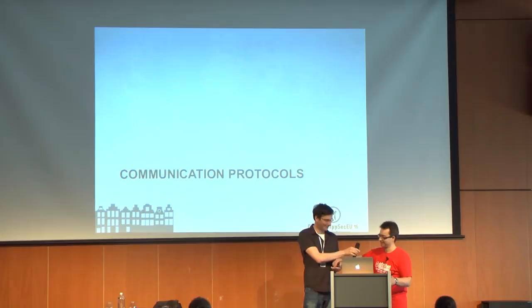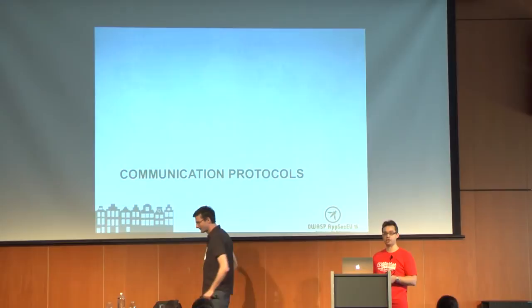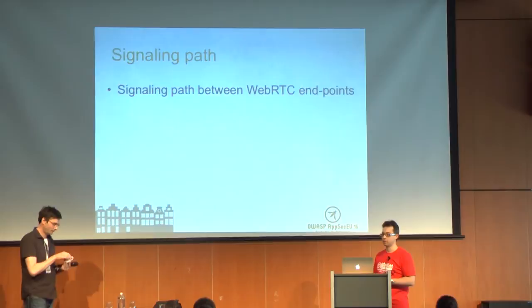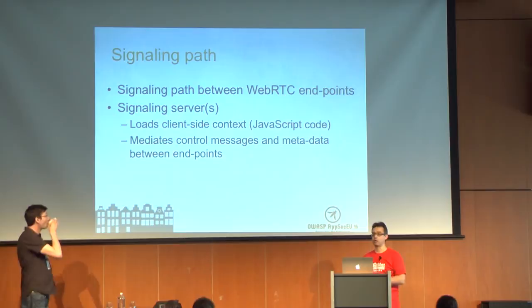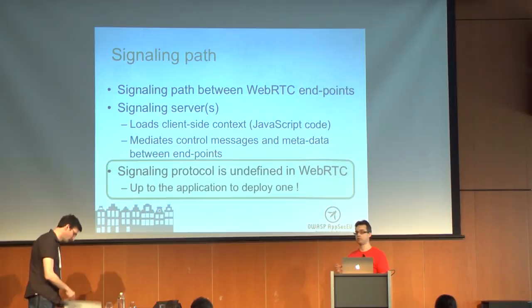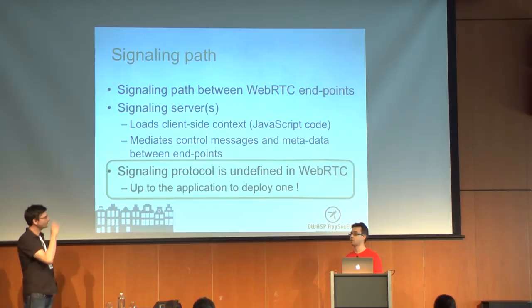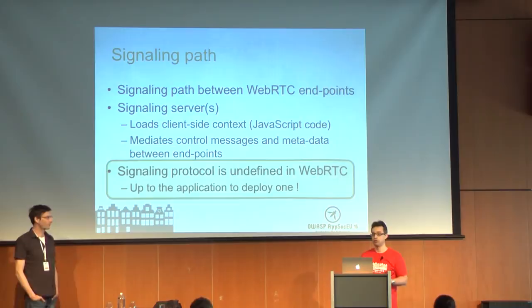Now we zoom into how the signaling and media parts are actually set up. The signaling part is just to exchange control messages and metadata between endpoints — a centralized paradigm. Importantly in WebRTC, the signaling is not specified. You need the metadata on the client endpoints, but there's no specification for how you actually exchange it to the other side. You can use socket.io, XHR, or any protocol you want.